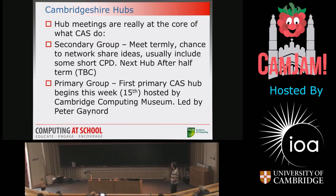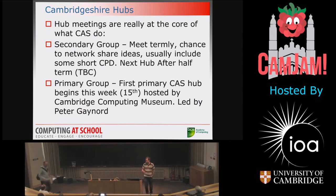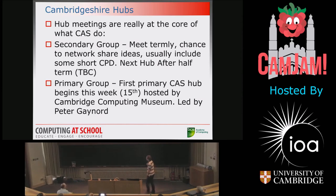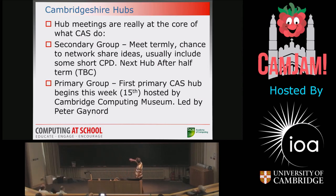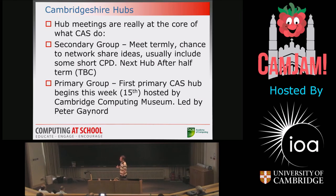In the Cambridge area, we have two hubs. Most of what the CAS group does — the core of their work — is through their hub meetings. In Cambridge, we have a secondary group, which I'm leading at the moment, and very excitingly, this week we have the primary group for the first time. They're meeting on the 15th, hosted at the Cambridge Computing Museum, which is a fantastic place to go and visit — lots of resources, and a really great place to take kids as well.